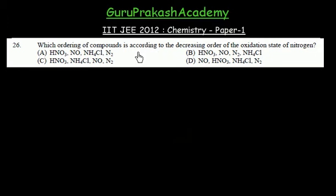Now this question is finding oxidation number. So let us do redox reaction chapter. Question says, which ordering of compound is according to the decreasing order of oxidation state of nitrogen? So we have to find oxidation state of nitrogen in each compound. So let us find.